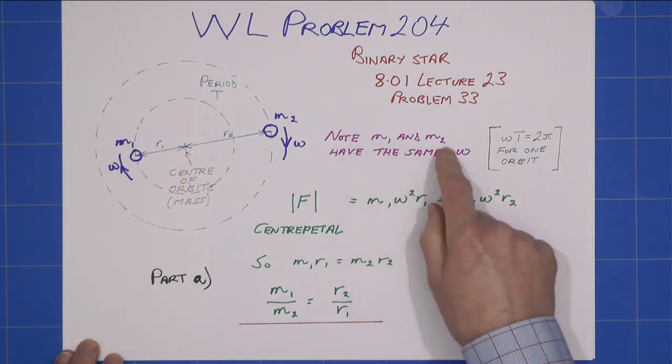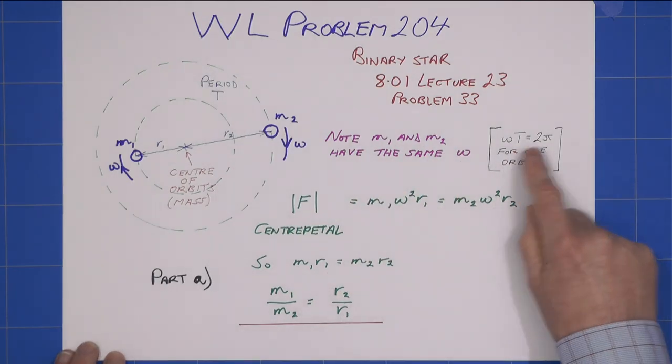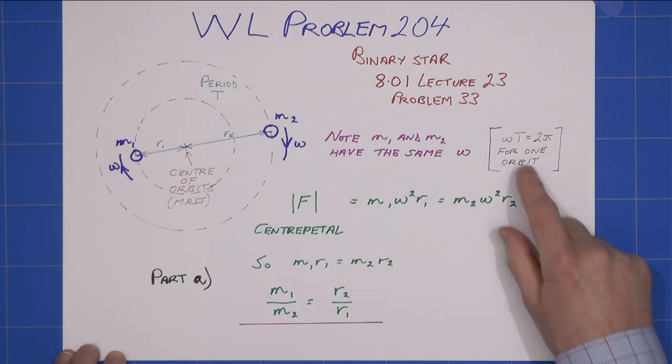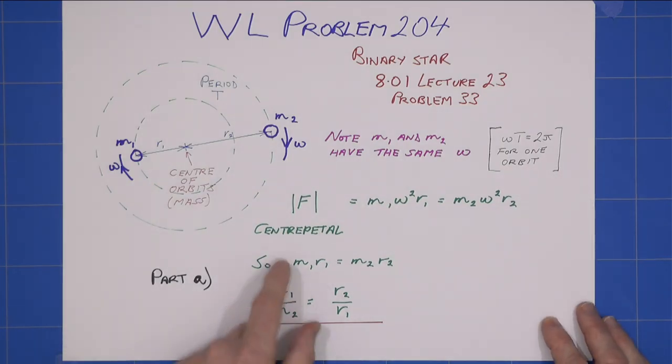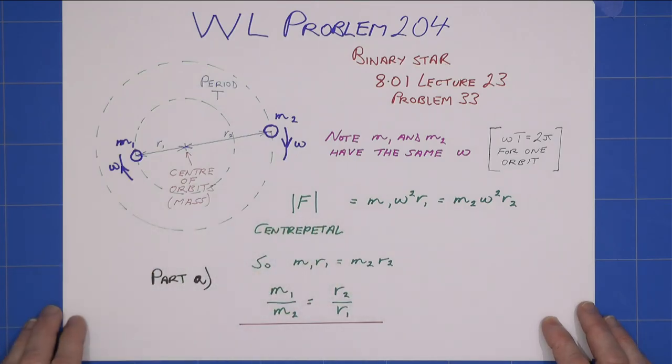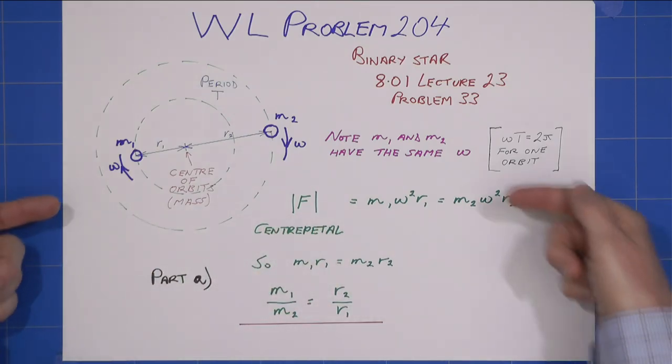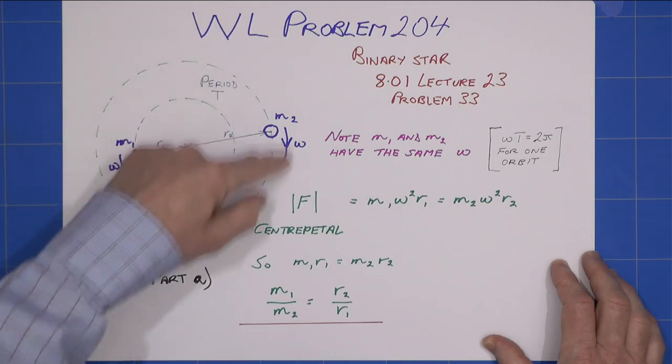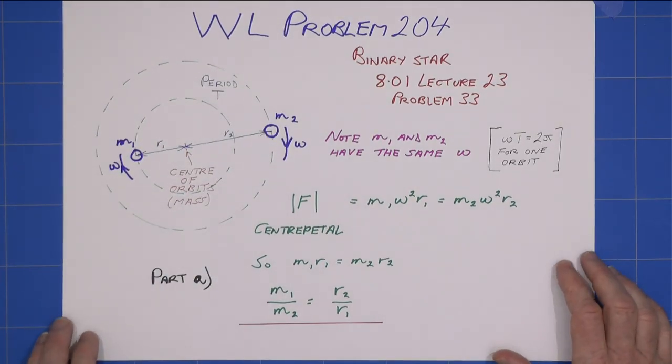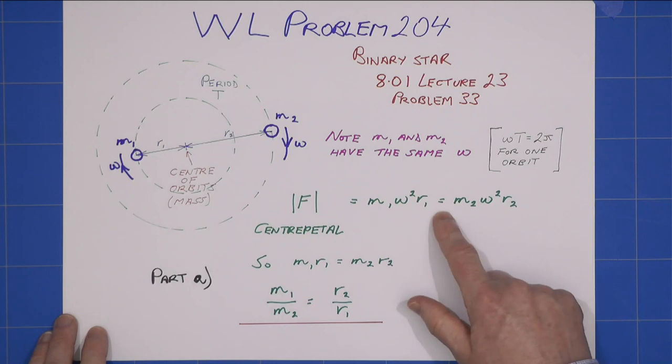We just don't know. So it is essential for this system to be stable that m1 and m2 have the same ω, where ωT = 2π for one orbit. I consider the centripetal forces required for the two stable orbits, and they must equal each other.